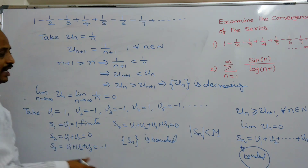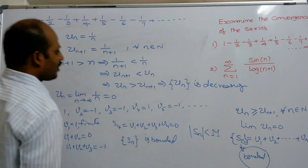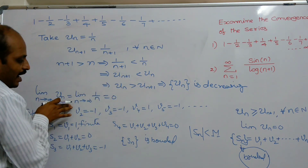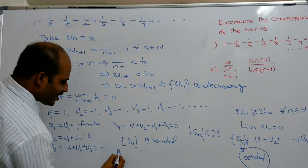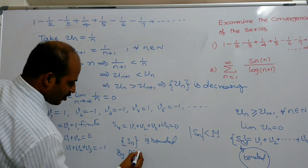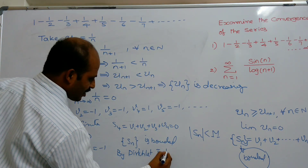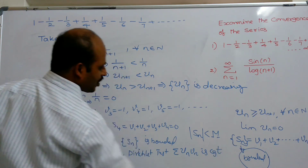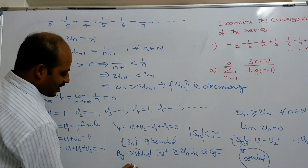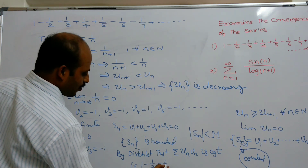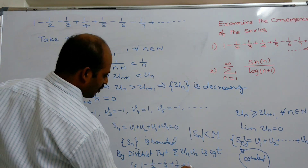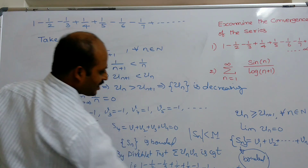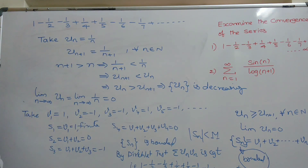Since SN is bounded, UN is a decreasing sequence, and the limit as N tends to infinity of UN equals 0, by the Dirichlet test, summation UN times VN is convergent. That is, the given series 1 minus 1/2 minus 1/3 plus 1/4 plus 1/5 minus 1/6 minus 1/7 plus and so on is convergent.